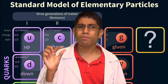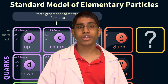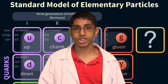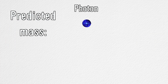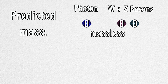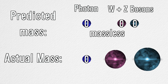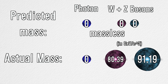But there was one tiny problem with the standard model. Prior to the 1960s, theories predicted that photons and W and Z bosons should all be massless. Experimentation showed that photons were indeed massless as predicted. However, the W and Z bosons had mass.